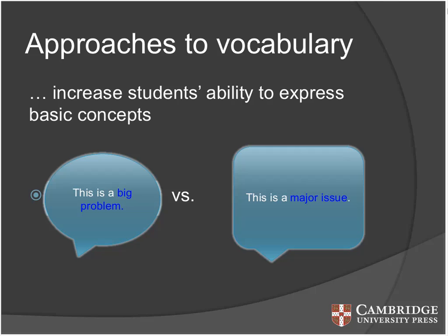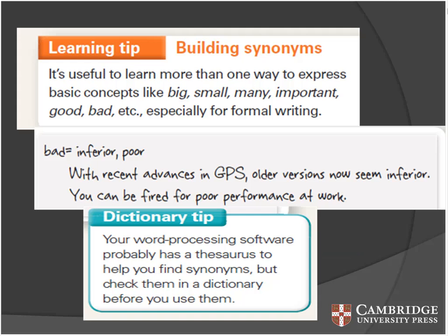We need materials to help people do this. This is an example of a learning tip on building synonyms which recycles vocabulary students have already learned. It tells students they should learn more than one way to express basic concepts like big, small, many, important, good, and bad. This will be especially important in their formal writing. For example, for 'bad,' two synonyms are 'inferior' and 'poor': 'With recent advances in GPS, older versions now seem inferior,' and 'You can be fired for poor performance at work.' This kind of vocabulary sounds more academic and professional and gives an impression of the student as someone more fluent and educated.